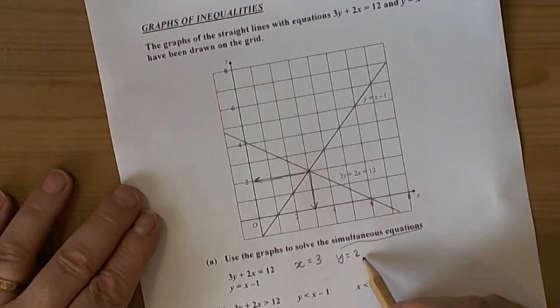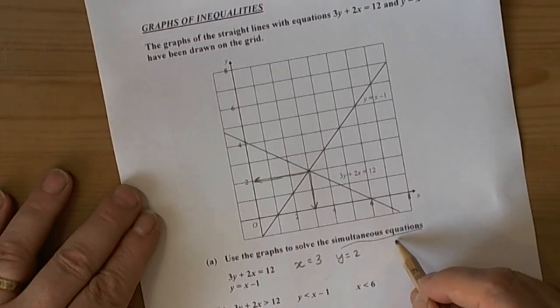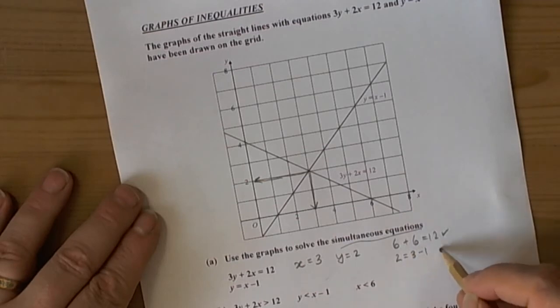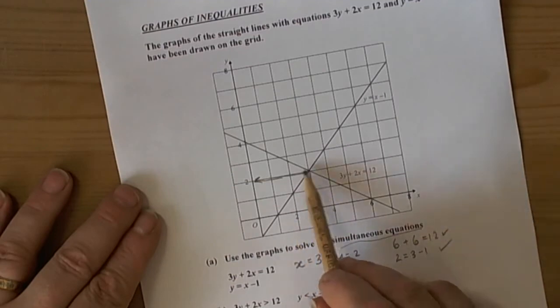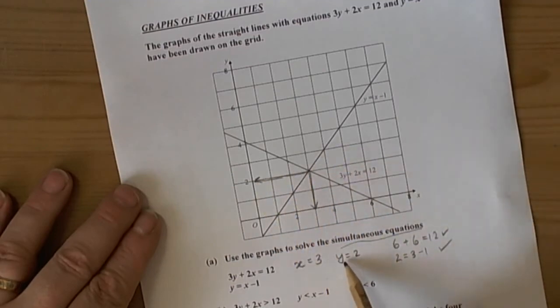We should check that this works to make sure we haven't made any mistakes. The first equation: 3 times y, so 3 times 2 is 6, plus 2 times x, so 2 times 3 is 6, equals 12. Yes. The second equation: y equals 2, which equals 3 minus 1. Yes. So the solutions are x equals 3 and y equals 2.